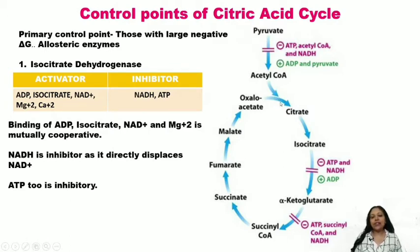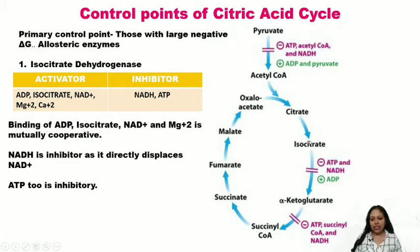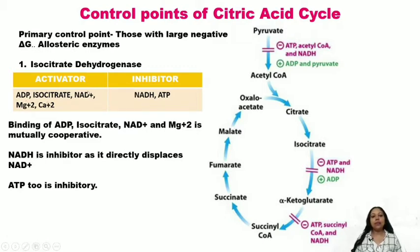The primary control points are those with large negative delta G's — these are allosteric enzymes. The first enzyme we talk about is isocitrate dehydrogenase, catalyzing the conversion of isocitrate to alpha-ketoglutarate. Its activators are ADP, isocitrate, NAD+, magnesium ion, and calcium ion.